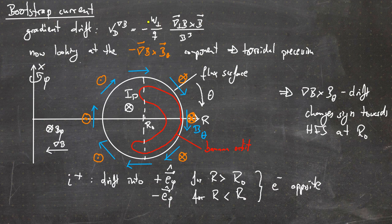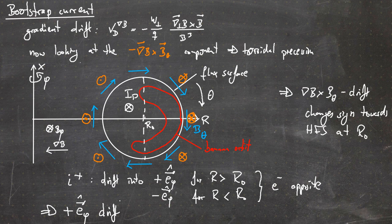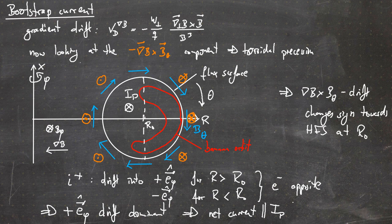There is a charge dependence in the drift. If you look at the banana orbit in the poloidal projection, you see that there is a net drift into the plus phi direction because the particles spend much more time on that part of the poloidal cross section. So there's a drift into the positive phi direction - this is the dominant part. From this, a net current parallel to the plasma current can arise, and this is the bootstrap current.